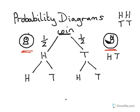Then we could toss the coin again. After we've got the first head, we could toss it again, and then we've got another 50% chance of getting a head and a 50% chance of getting a tail. Then if we had a tail first, we toss the coin again — there's a 50% chance of getting a head and a 50% chance of getting a tail.